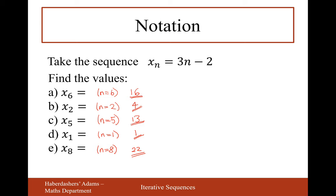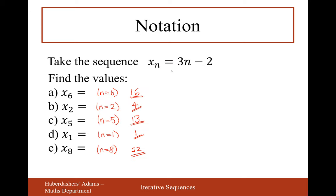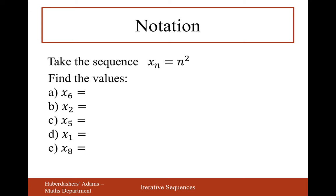Sometimes we'll have sequences as lists of numbers, sometimes written by a formula. Let's have a go at another formula one. For x₆, n is 6, so 6 squared is 36. For x₂, n is 2, so 2 squared is 4. The next numbers will be 25, 1, and 64.